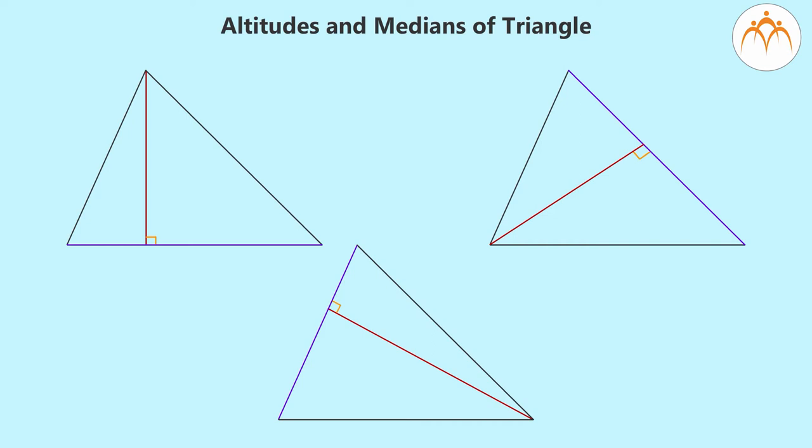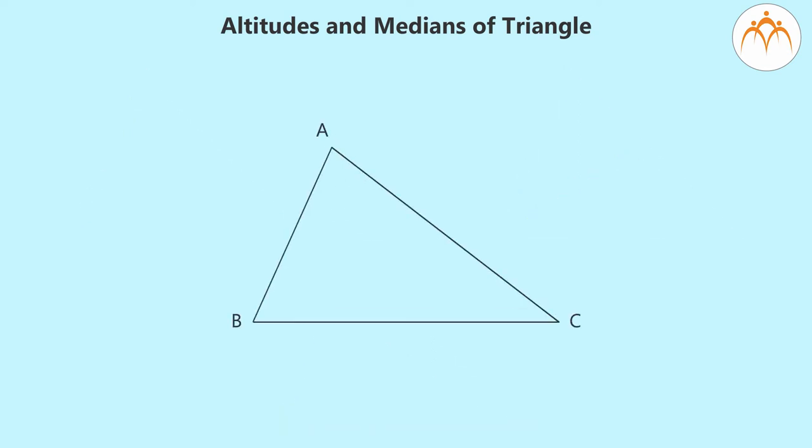Now, consider a triangle ABC. Let us draw all three altitudes of this triangle. For this, we need to know how to draw perpendicular from a point outside a line to the line. It's simple, right? We can use set square or we can use compass for this.